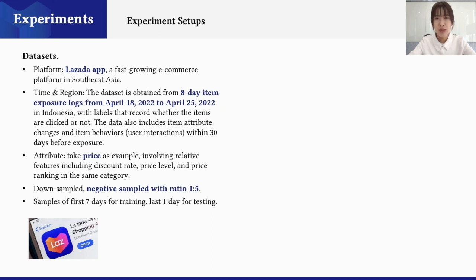Since existing public datasets lack accurate records on item attributes, we collect the dataset from Lazada, which is a fast-growing e-commerce platform in Southeast Asia. The dataset is obtained from 8-day item exposure logs, with labels that record whether the items are clicked or not, and also includes item attribute changes and item behaviors within 30 days before the exposure.